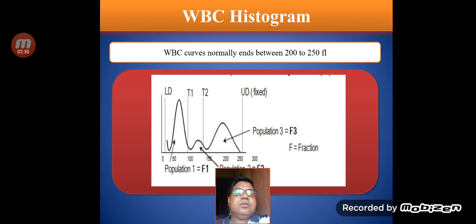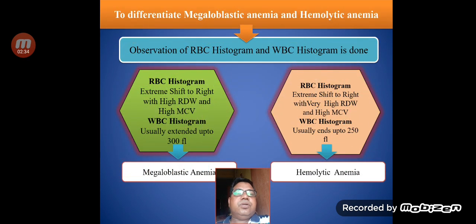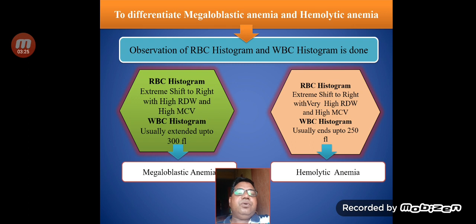In order to differentiate megaloblastic anemia and hemolytic anemia, the observation of both the RBC histogram and WBC histogram is important. In both conditions the RBC histograms appear very similar — there is a right shift of the curve with high RDW and high MCV. The key difference is in the WBC histogram: in megaloblastic anemia the WBC histogram extends up to 300 femtolitres, whereas in hemolytic anemia it ends at around 250 femtolitres.